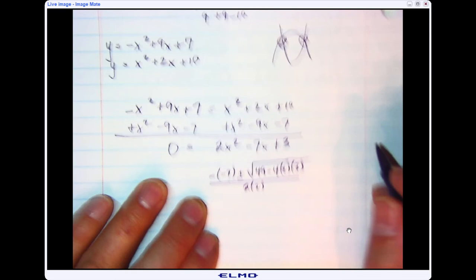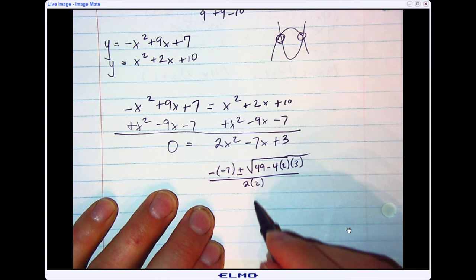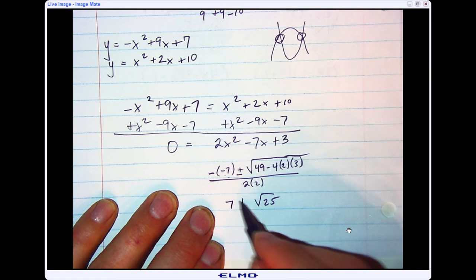So now if I do inside the square root sign, which is the discriminant, 4 times 2 is 8, times 3 is 24. 49 minus 24 is 25. The opposite of negative 7 is 7, and 2 times 2 is 4.